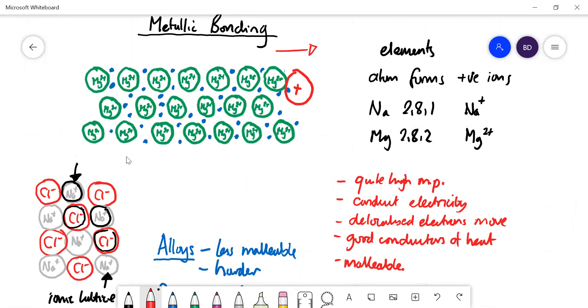That's going to disrupt the layer structure of the ions, and that means that they can't slide over each other quite so easily, and it makes it less malleable.